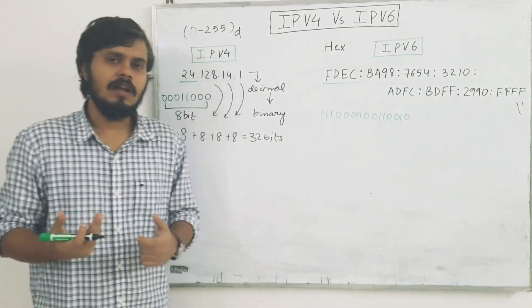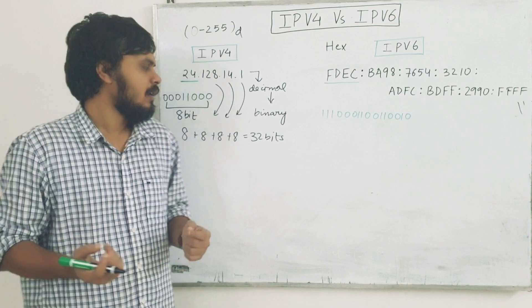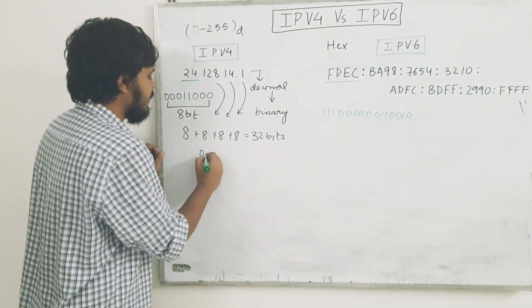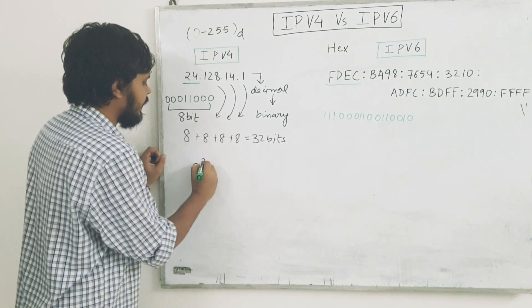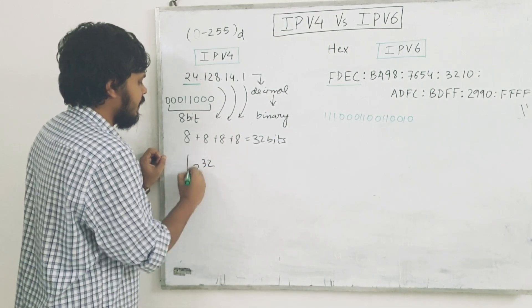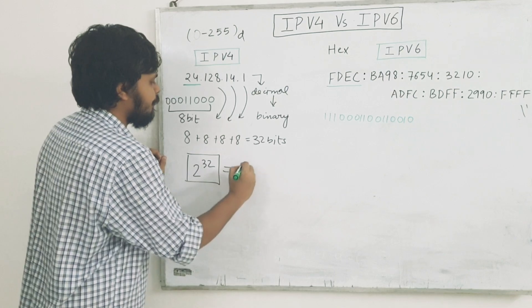Now think about it. If you apply a simple permutation, then you can change 0 or 1 in 32 places. So there are in total, 2 to the power 32 permutations.